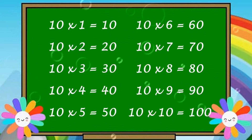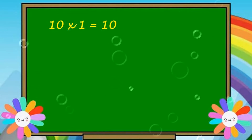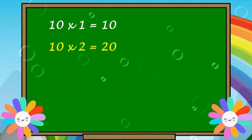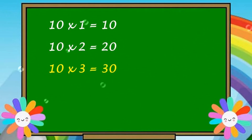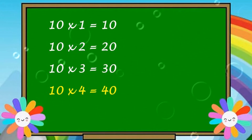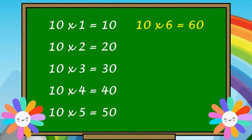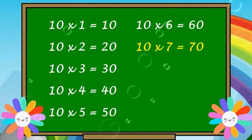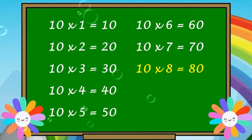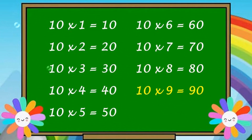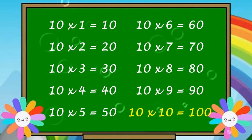Coming to the next table, table of 10. 10 1s are 10. 10 2s are 20. 10 3s are 30. 10 4s are 40. 10 5s are 50. 10 6s are 60. 10 7s are 70. 10 8s are 80. 10 9s are 90. 10 10s are 100.